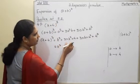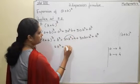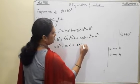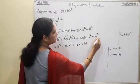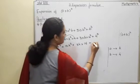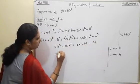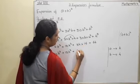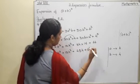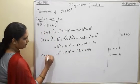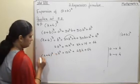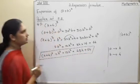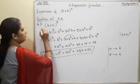So here k cube, then 3 times 4 is 12, giving 12k squared. Then 4 squared is 16, so 3k into 16 gives 48k. Then 4 cube: 4 fours are 16, 16 fours are 64. So the expansion is k cube plus 12k squared plus 48k plus 64. This is the final answer — you can put a box around it so the examiner can find it easily.